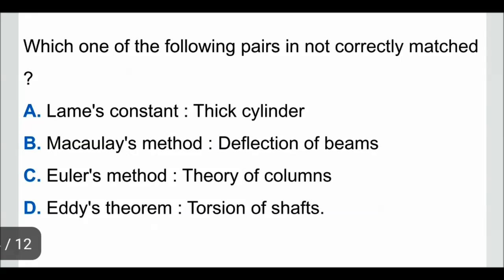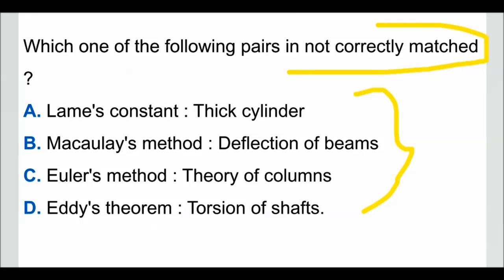Question 3: which one of the following pairs is not correctly matched? Option A, Lame's constant — thick cylinder: correctly matched, as Lame's constant is used to find the stress of a thick cylinder. Option B, Macaulay's method — deflection of beams: correctly matched. Option C, Euler's method — theory of columns: correctly matched, used to find the critical load of columns. Option D, Eddy's theorem — torsion of shafts: Eddy's theorem is not related to torsion of shafts; it is related to arches. So option D is not correctly matched and is the correct answer.